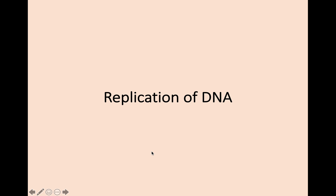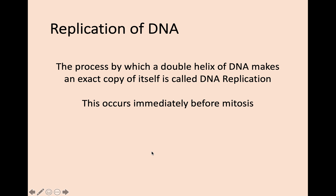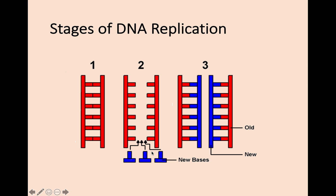To continue on with the replication of DNA, you might remember from National 5 that in mitosis, there's a term at the start that just says DNA is duplicated or replicated, and then we go on to producing two new daughter cells. What we're going into in Higher is a bit more detail on how DNA actually replicates — how a double helix of DNA makes an exact copy of itself.